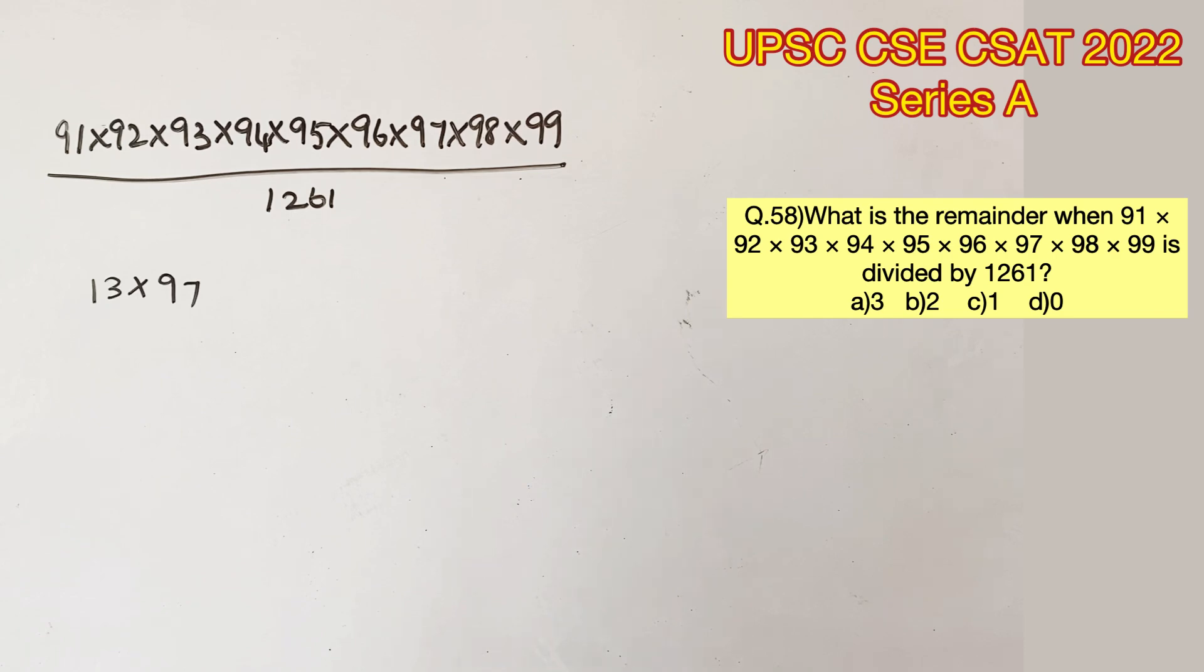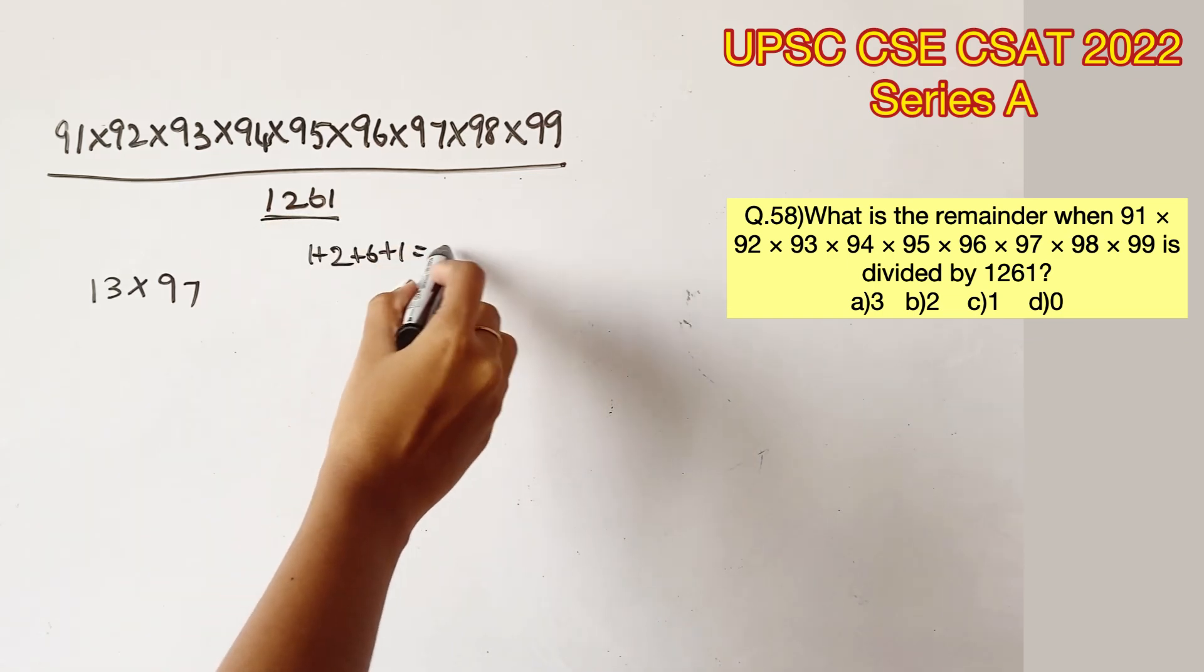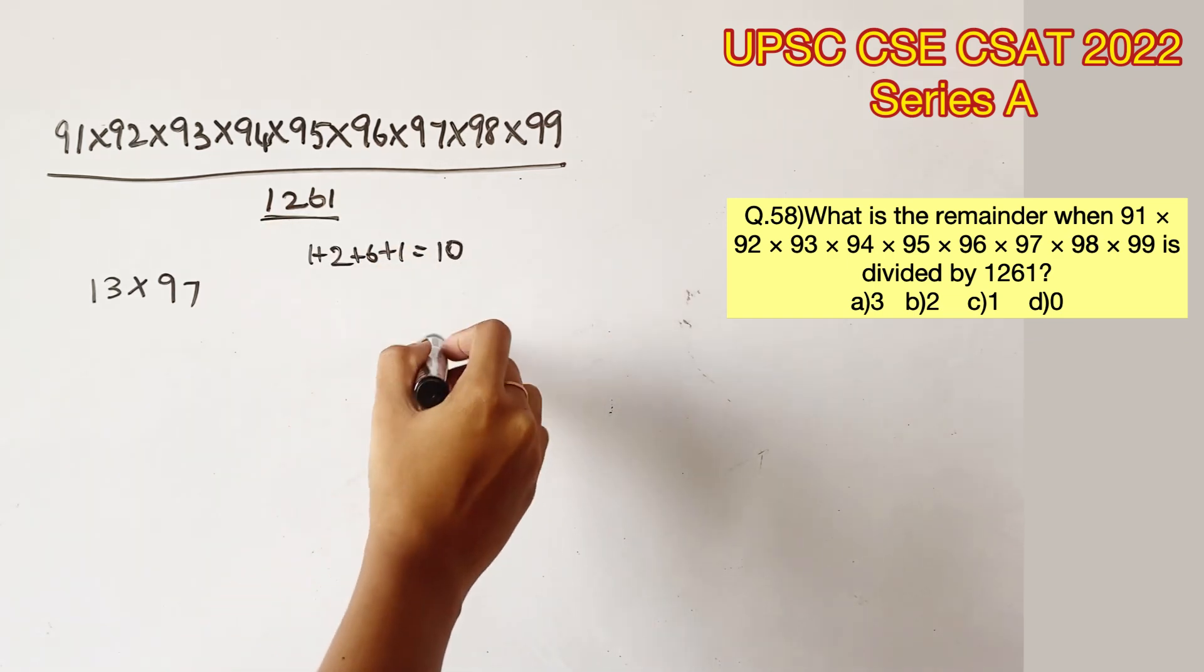So let's try and arrive at that answer in a different way. If you see the digits here, 1 plus 2 plus 6 plus 1 is equal to 10.